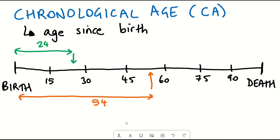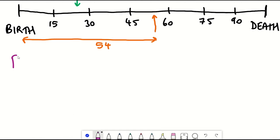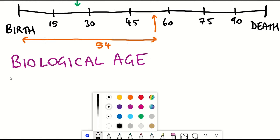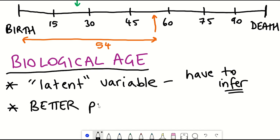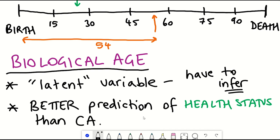The second one is a bit more challenging to interpret and that is biological age. Unlike chronological age, biological age is a so-called latent variable, that is it can only be inferred, as we'll see below.